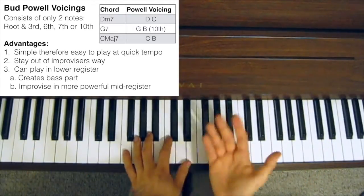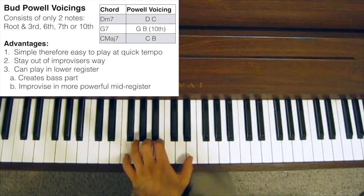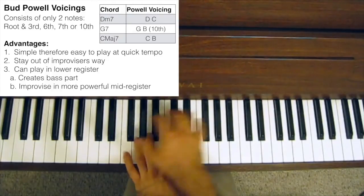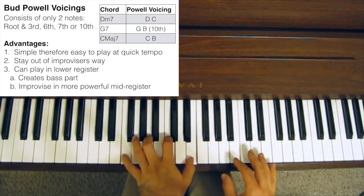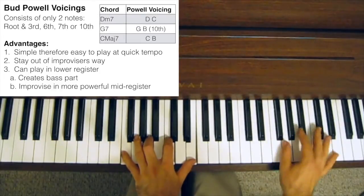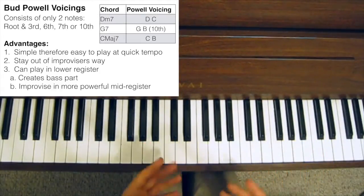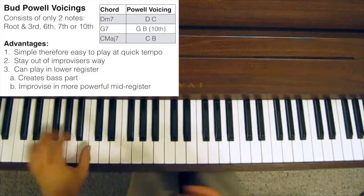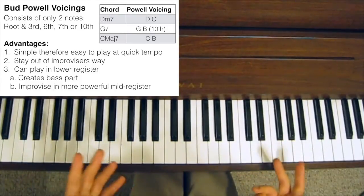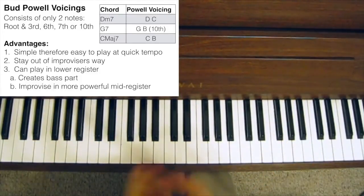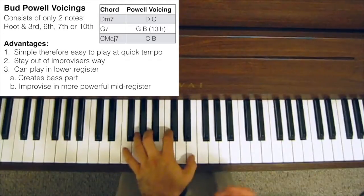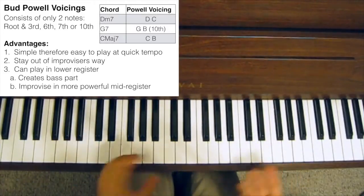Whereas with the other, the Bill Evans and the Thelonious Monk-style voicing, because your left hand is restricted in the middle register, and if you improvise in the middle or the higher register, it really sounds a little bit hollow or empty without a bass part, unless you have a bass player, which you often do, and in that case, fine, it doesn't matter, you can stick around this part of the piano. But if you don't have a bass player, it can sound a little bit not quite finished.